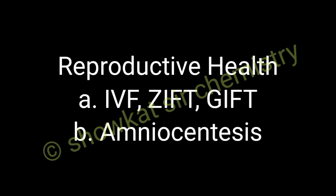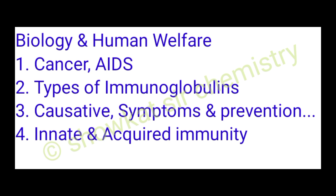Moving towards the next unit — biology and human welfare. Here you will study in broad terms: cancer, AIDS, and types of immunoglobulins. You should also know the causative agents, symptoms, and preventive measures of typhoid, hepatitis, filariasis, malaria, ascariasis, common cold, MBS, and ringworms.